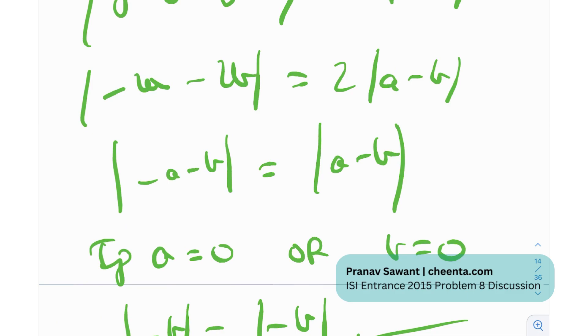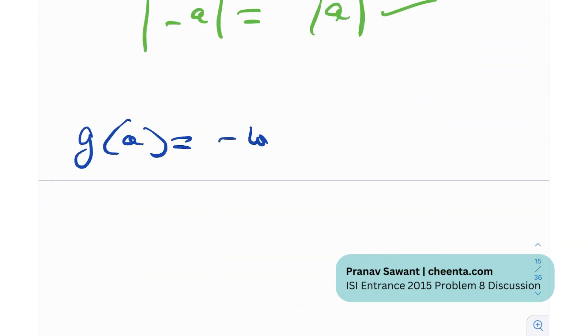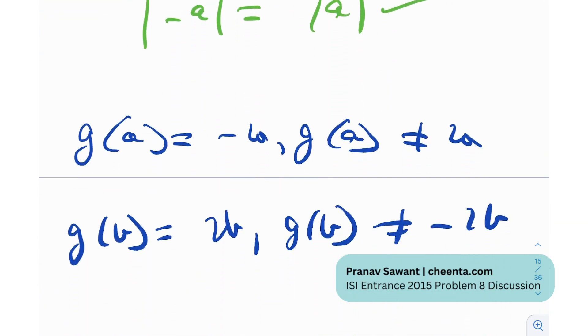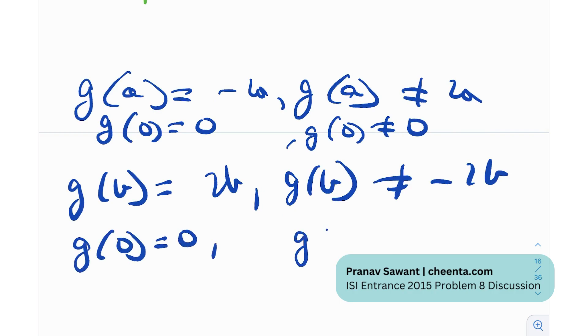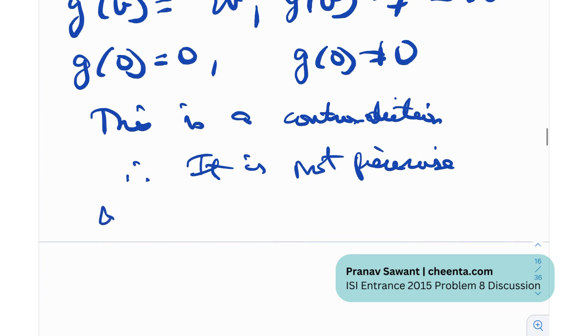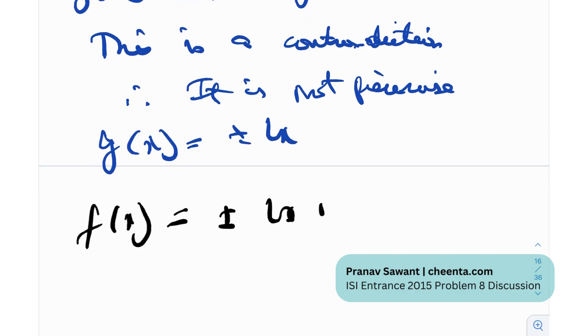So essentially, the conclusion that we can find is this can only be true if and only if a equals 0 or b equals 0. But we had essentially assumed that g(a) is negative 2a and g(a) is not 2a. Similarly, we had assumed g(b) to be 2b and g(b) to not be negative 2b. And here, we're essentially saying that a has to be 0 or b has to be 0. So if a is 0, then we get g(0) equals 0 and g(0) is not equal to 0. And if b equals 0, we get g(0) is 0 and g(0) is not equal to 0. In both cases, we get a contradiction. As simple as that. Therefore, it is not piecewise. g is not piecewise. So essentially, g(x) equals plus or minus 2x for all x. And from that, we derived the value of f(x), which is plus or minus 2x plus c.